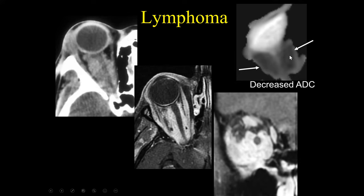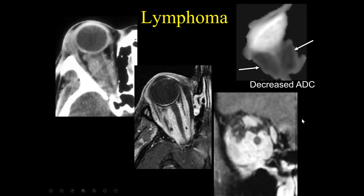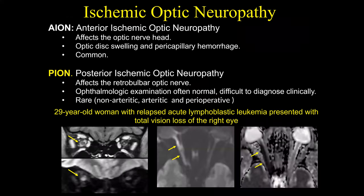Lymphoma has been associated with decreased ADC. I have seen numerous retrobulbar masses like this, and some have turned out to be lymphoma — the ADC can be confirmatory. But don't base your diagnosis purely on the ADC, because I have had some people say the ADC wasn't decreased, so how can it be lymphoma? Realize the ADC, especially once you get below the skull base, is fraught with artifact. If you are going to use ADC as a frontline assessment, you have to make sure your diffusion imaging is of really good quality. But yes, lymphoma has been associated with decreased ADC values.